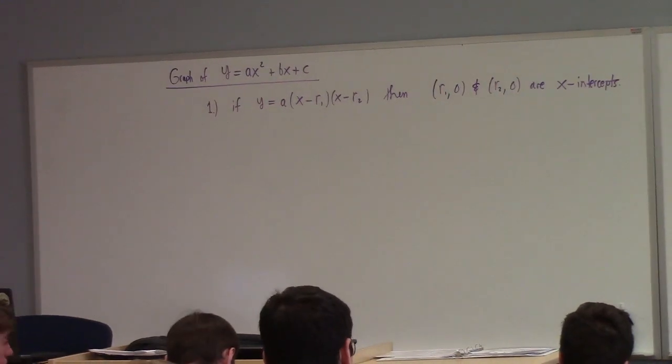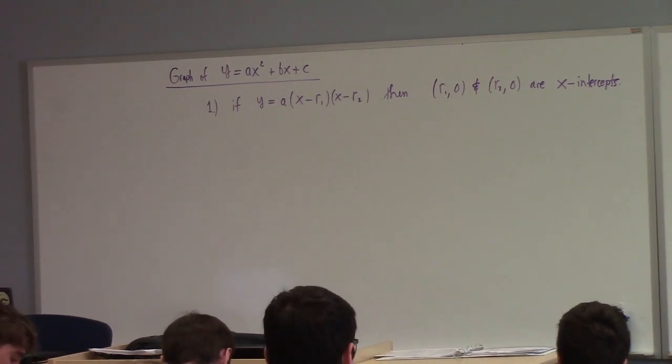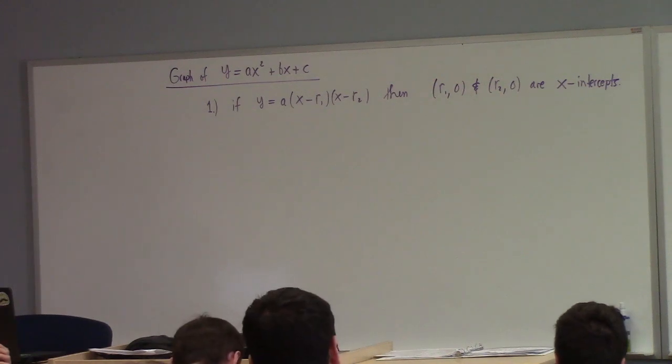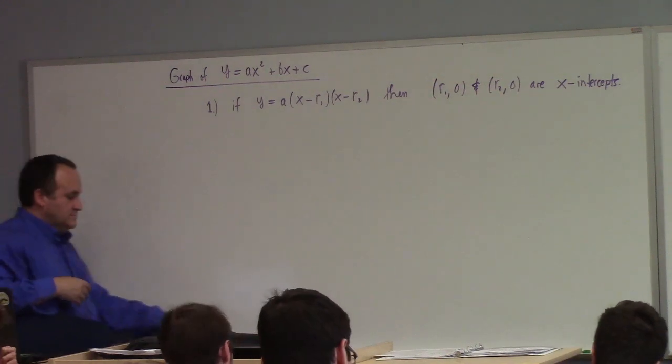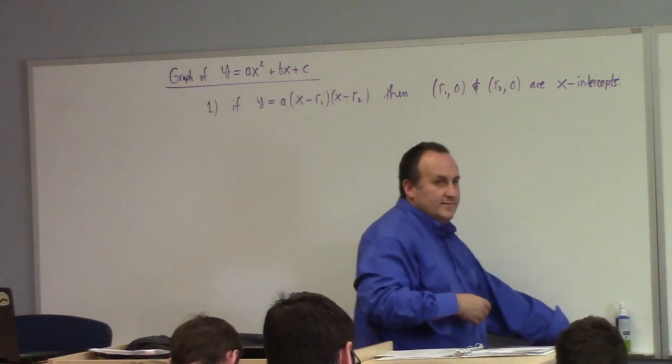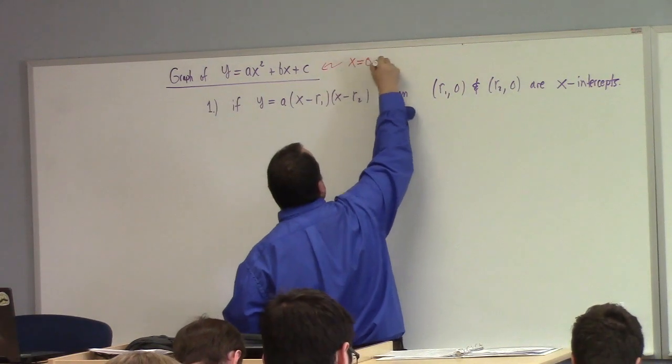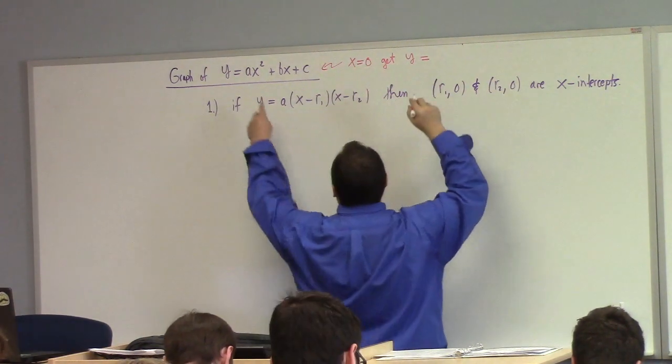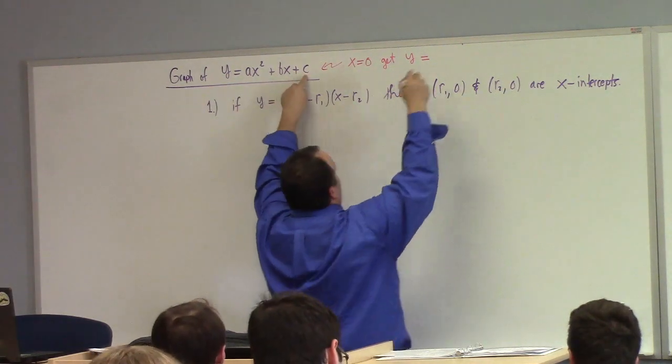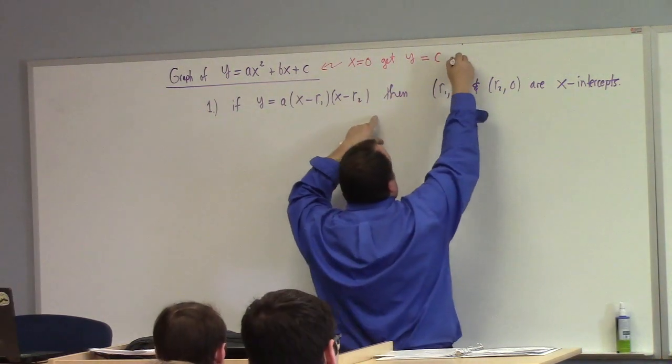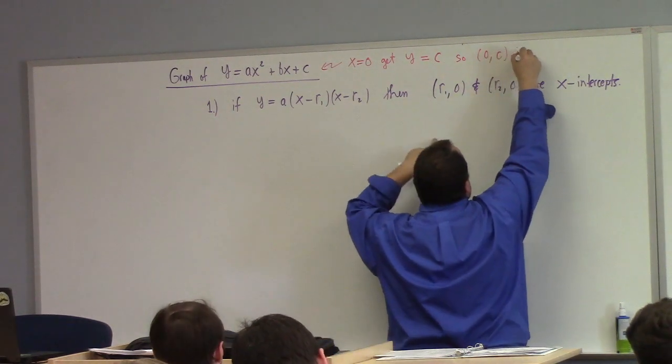What's the y-intercept of the graph? You're looking at ax squared plus bx plus c. What would the y-intercept be? If we put x equals 0 we get y equals c. So 0, c is y-intercept.